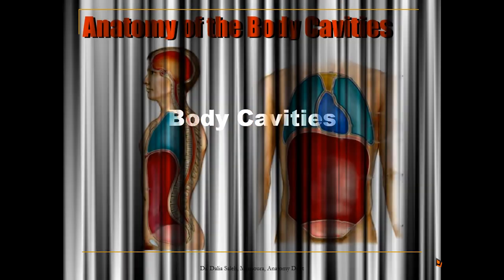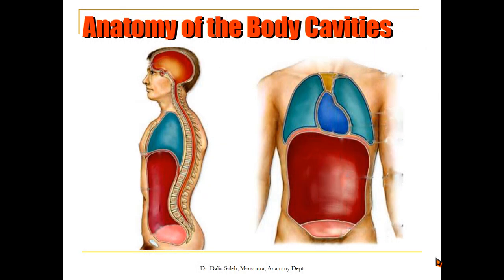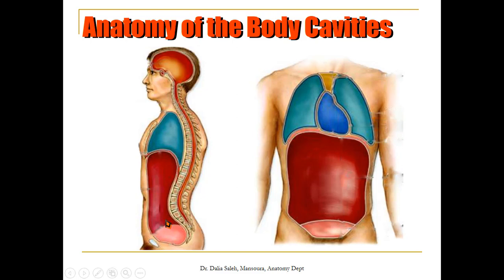Let's start first with the anatomy of the body cavities in order to know the orientation of the adult body. In this side view you can see two types of cavities. A dorsal cavity near the back of the body contains the brain and its meninges, and also a vertebral canal cavity which contains the spinal cord and its meninges. Ventrally, towards the ventral aspect of the body, we have two types of cavities: thoracic cavity and abdominal pelvic cavity. They are completely separated from each other by the diaphragm, while the abdominal and pelvic cavity are continuous with each other — there is no separation between them.